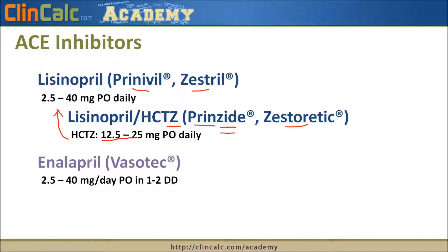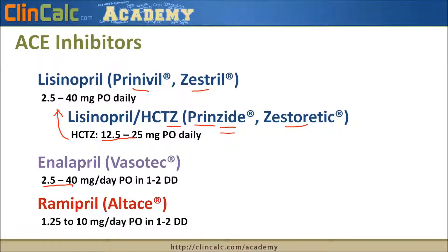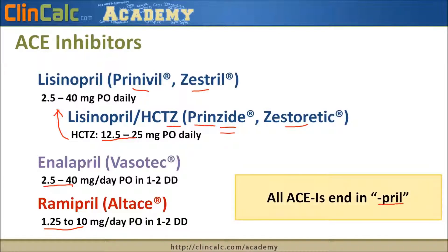A similar ACE inhibitor to lisinopril is Enalapril, with brand name Vasotec, dosed very similarly. Our third ACE inhibitor is Ramipril, brand name Altace — dosed very differently than lisinopril. You can think of Ramipril as the alternative ACE, or Altace. It's important that all ACE inhibitors have the suffix '-pril,' so if you see something ending in '-pril,' there's a good chance it's an ACE inhibitor.